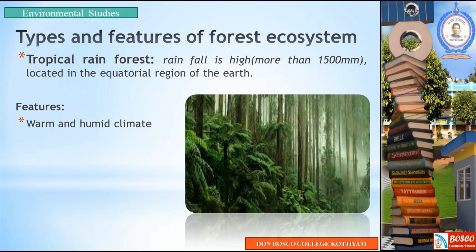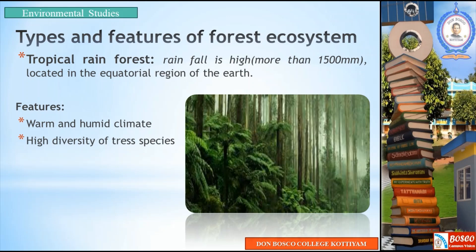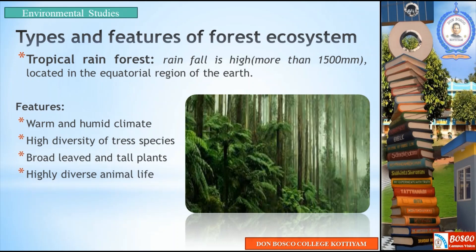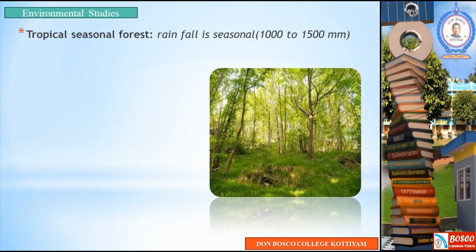The tropical rainforest has high rainfall, high diversity of trees and species, and broad-leaved and tall plants. It also has highly diverse animal life — different species and varieties of animals. There is also an abundance of insects and invertebrates. It is a highly diversified forest called the Tropical Rainforest.